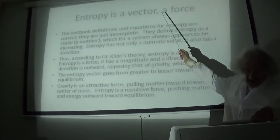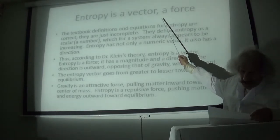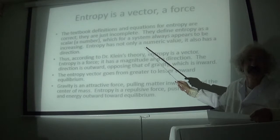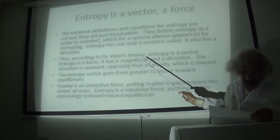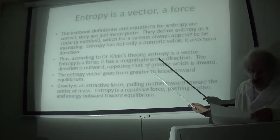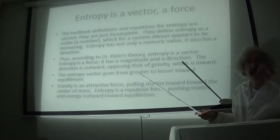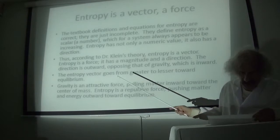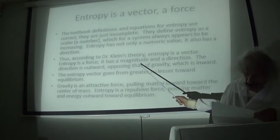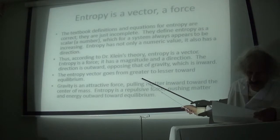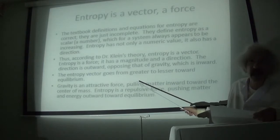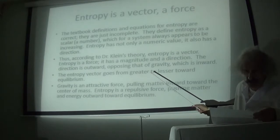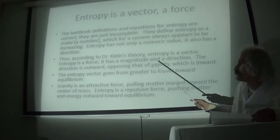Entropy is a vector, it's a force. The textbook definitions and equations for entropy are correct, they are just incomplete. Entropy is defined as a scalar, a number, which appears to be always increasing. Thus, according to my theory, entropy is a vector. Entropy is a force. It has a magnitude and a direction, and the direction is the opposite of gravity.